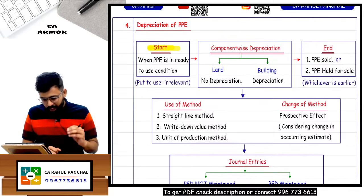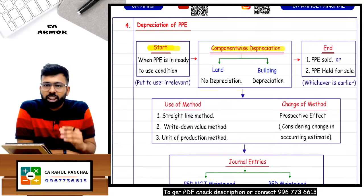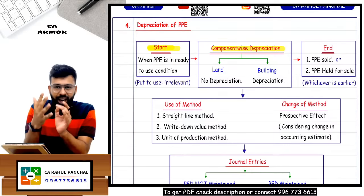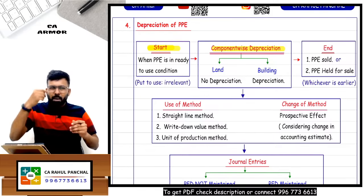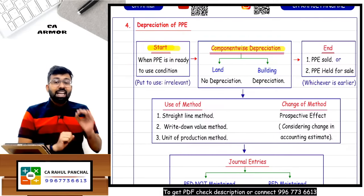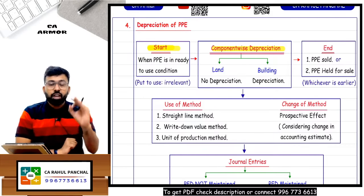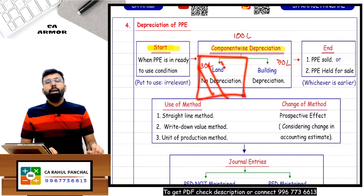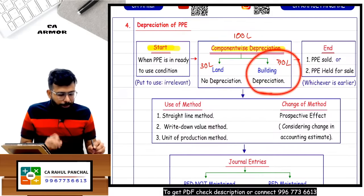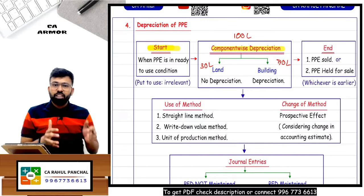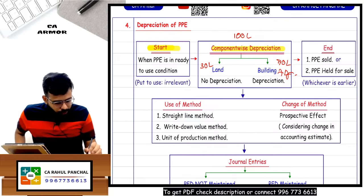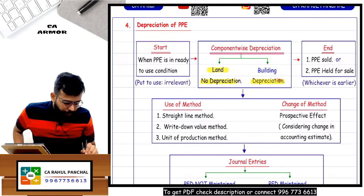This standard is very specific: when you charge depreciation, it should be charged component-wise. You bought one land and building - one entire factory for 100 lakhs. Land is something which is not depreciated; it has an infinite life. So you should say that out of 100 lakhs, 30 lakhs pertains to land and 70 lakhs pertains to building. Land should not be depreciated - it will appear at 30 lakhs only. For building, estimate the useful life, say 7 years, and charge 70 lakhs over 7 years.